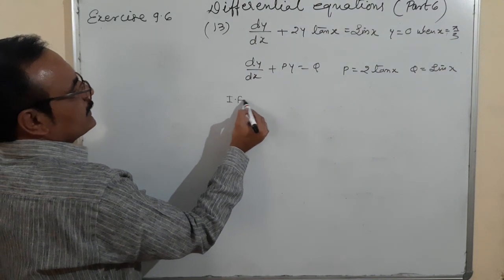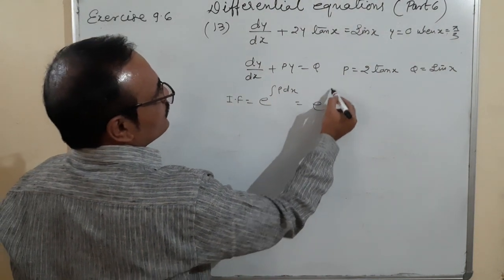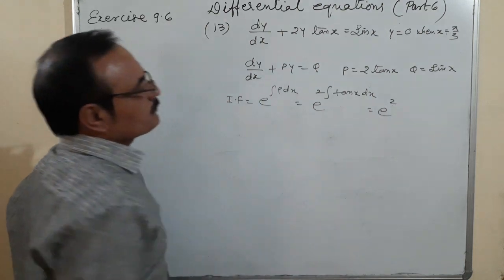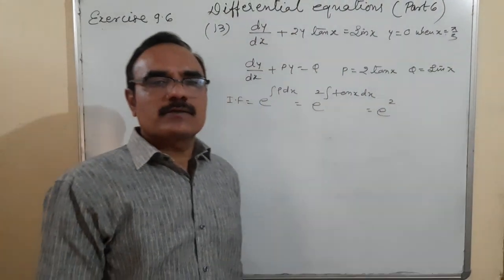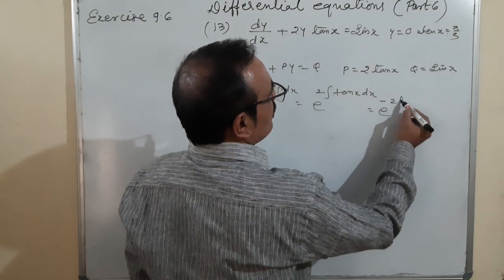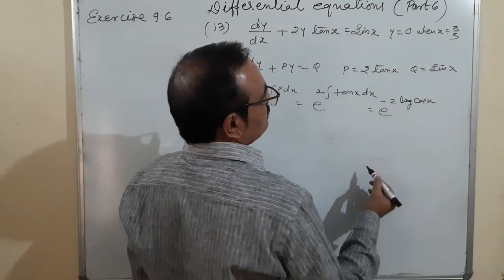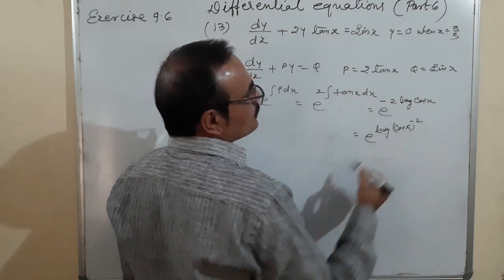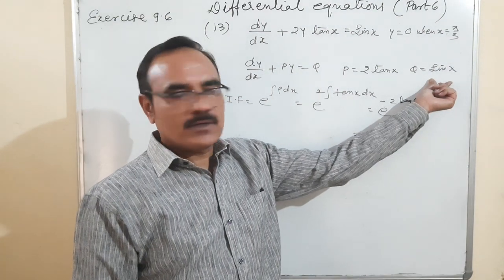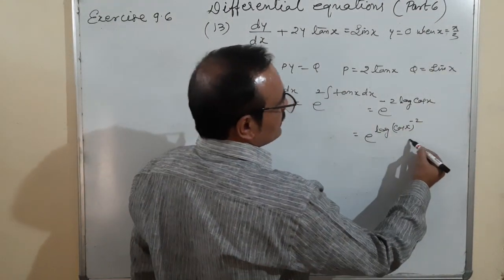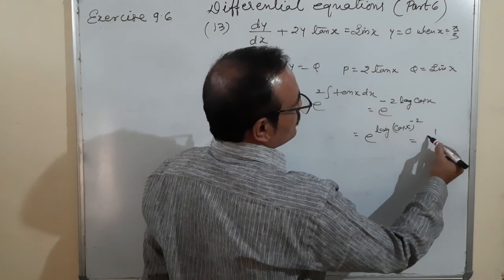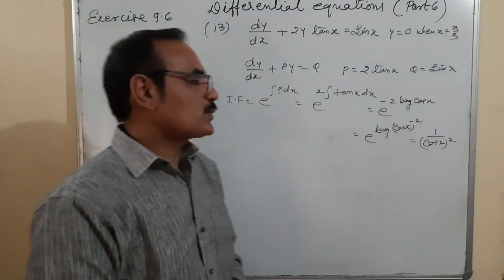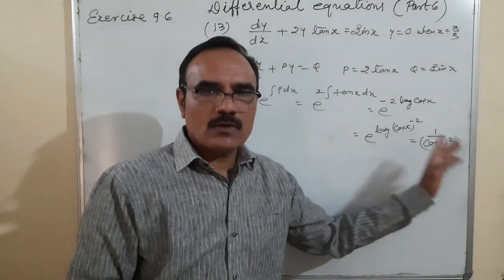Finding the integrating factor: e^(∫2 tan x dx). The integration of tan x is -log cos x, so e^(2·(-log cos x)) = e^(log cos x)^(-2) = cos x^(-2) = 1/cos²x. The integrating factor is 1/cos²x = sec²x.